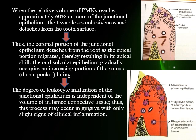When the coronal portion of the junctional epithelium detaches from the root and the apical portion migrates, this results in an apical shift of the epithelium. The more the degree of leukocyte infiltration of the junctional epithelium, the deeper the pocket — and this is independent of the volume of inflamed tissue. Even in an inactive pocket with no visible signs of inflammation, there could still be a huge infiltration of leukocytes causing pocket deepening. This is a vicious cycle, broken only by removing the plaque bacteria from the area.